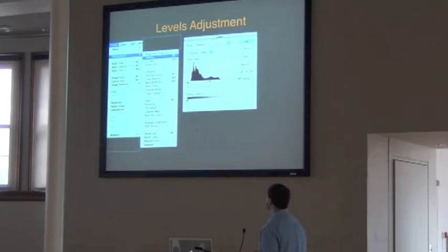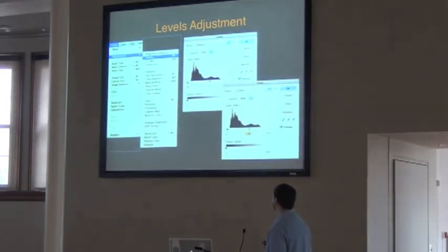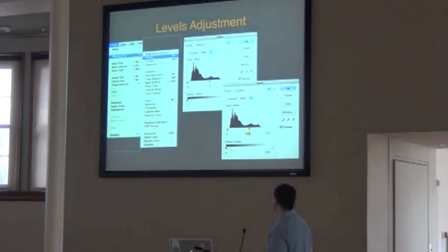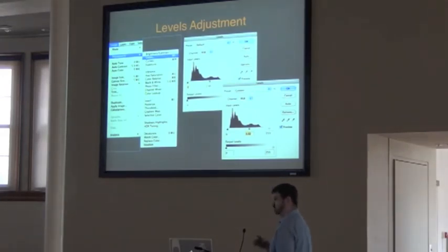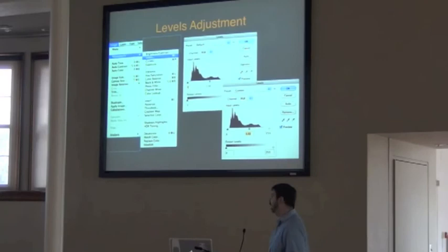For levels adjustment, this is also very minor. Typically we move the shadows over to where the histogram starts. Then the same thing with the highlights — it's not always appropriate to move it all the way over; you have to get a feel for that. And then adjusting the midtones just to get it looking like it should when you're working on a specimen.